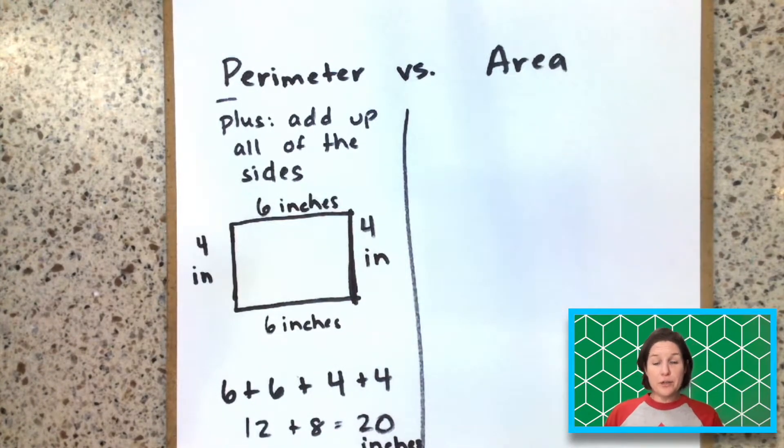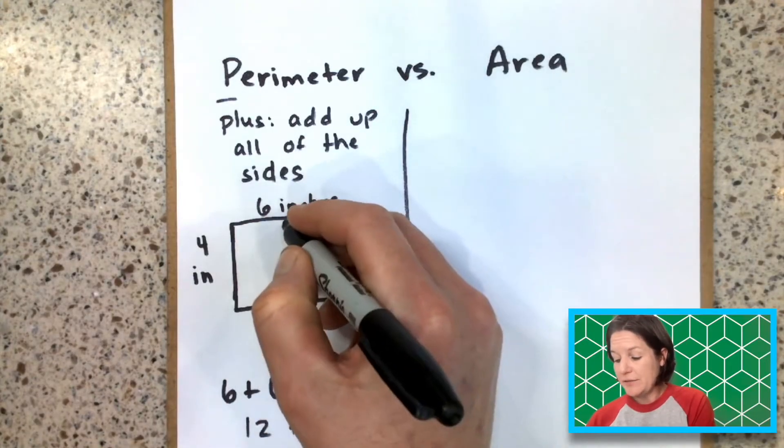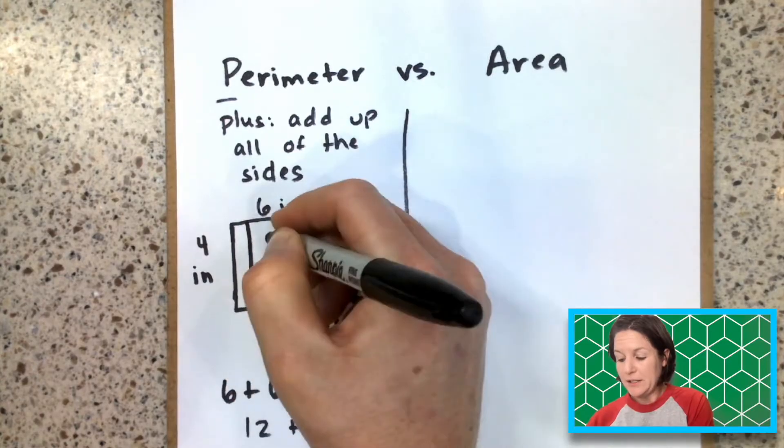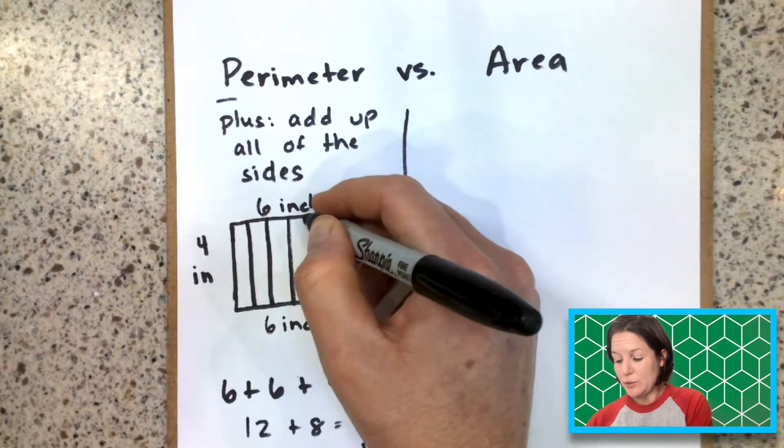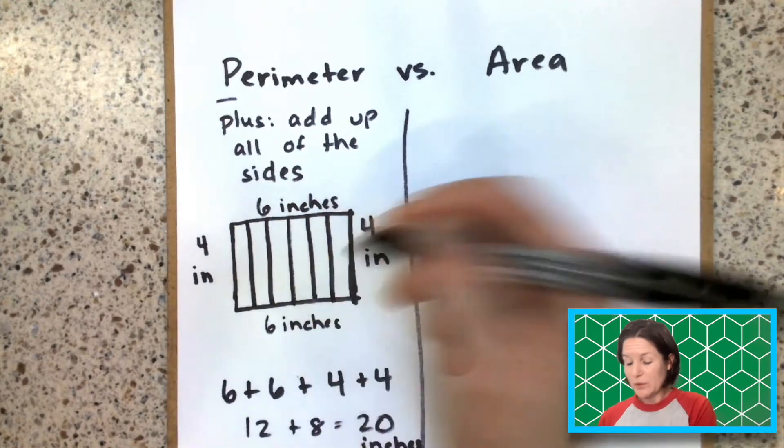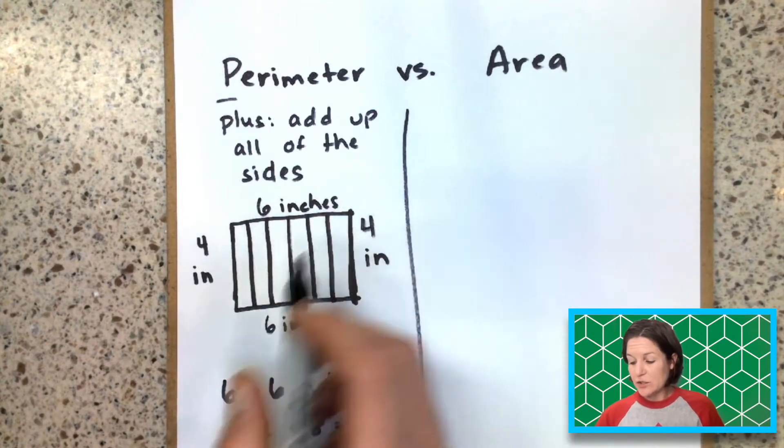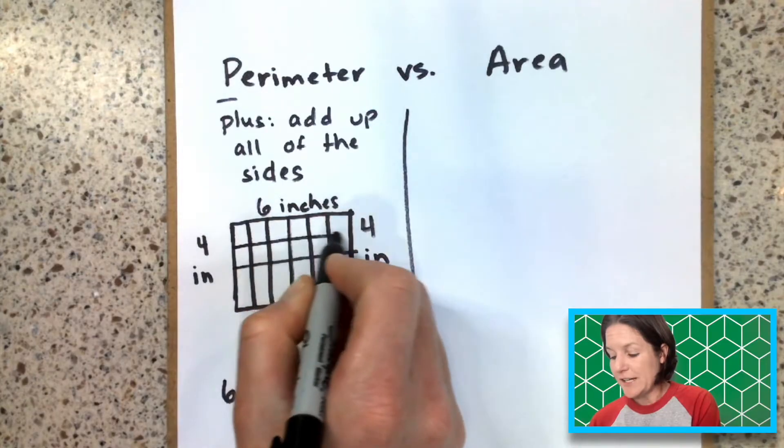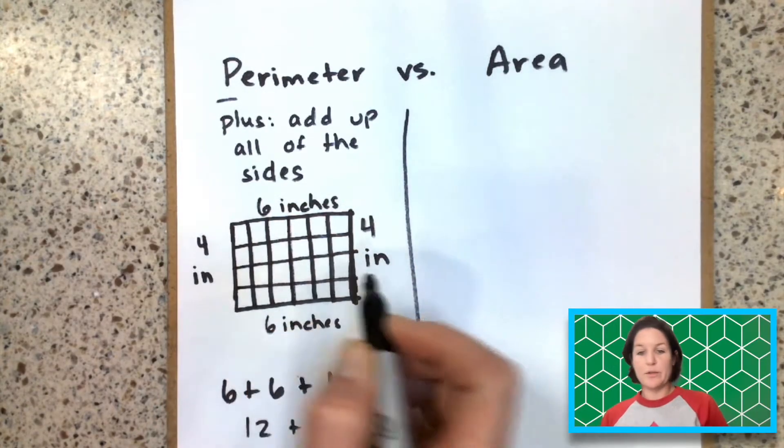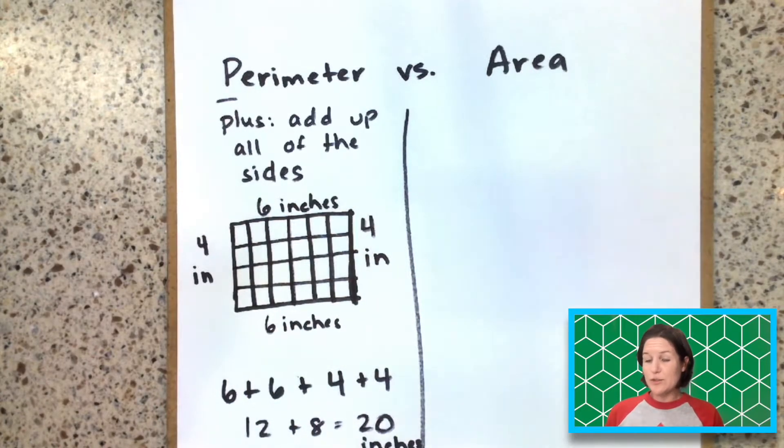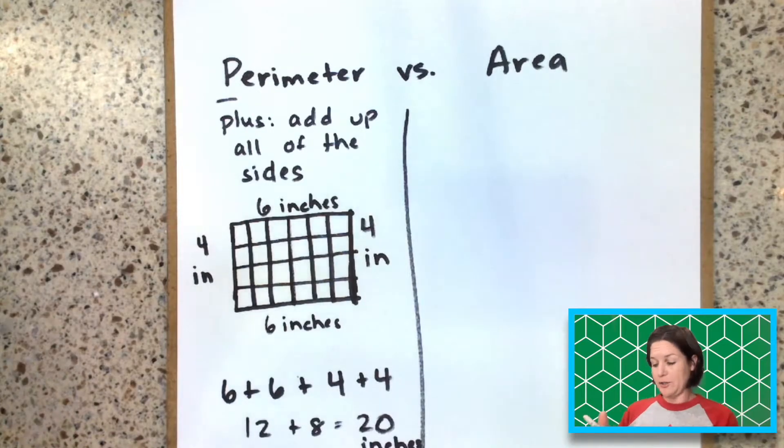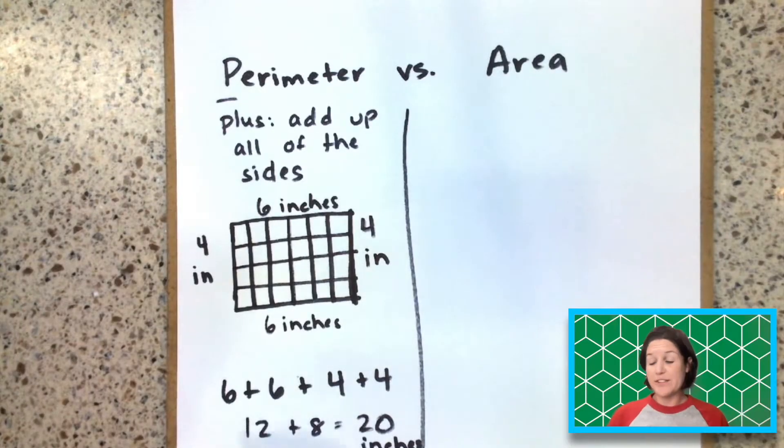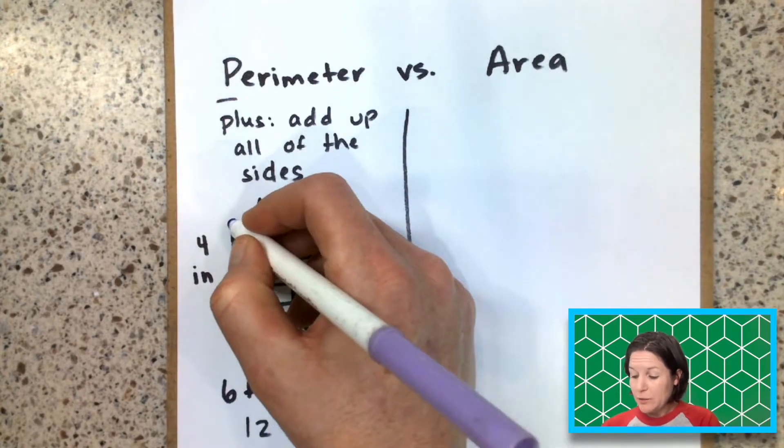Now a lot of times in third grade, they will receive something like this, where it might be broken up into an array sort of thing, six inches across and four inches down. If it's like this, where they're seeing a grid, what they need to do, let me get another marker. Okay, what they need to do here is we're going to still add up all the sides, but this time we'll be counting around.